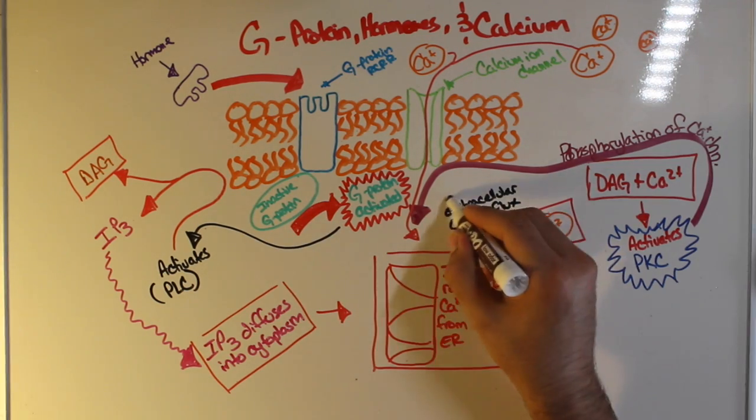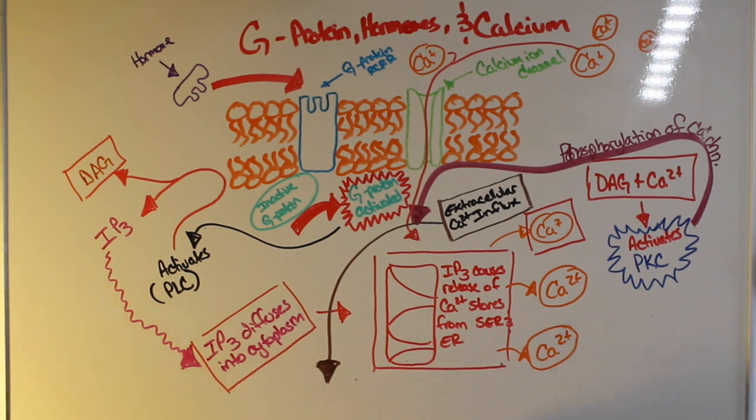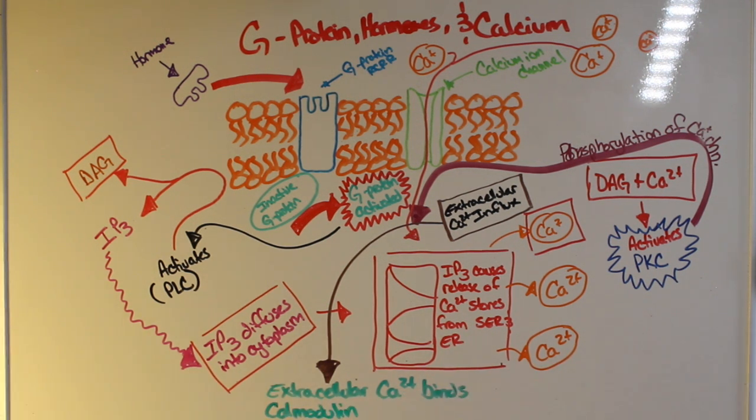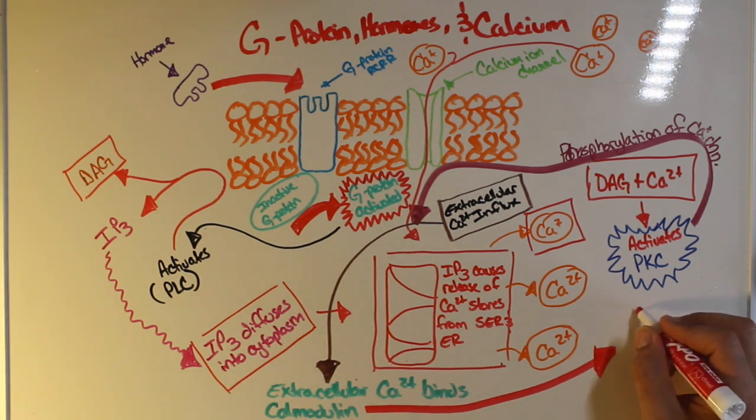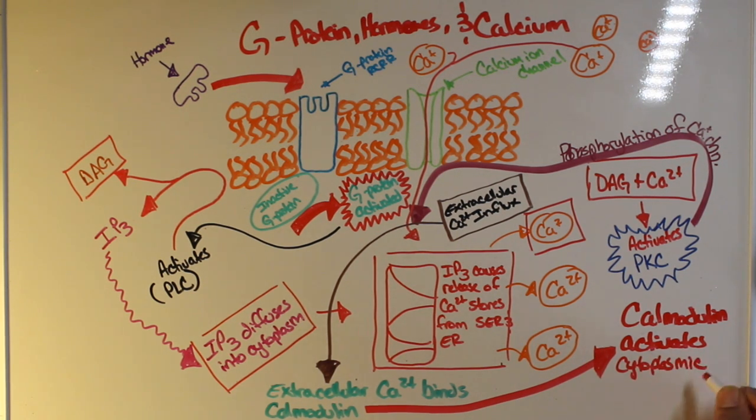Now once this occurs, there will be an abundant amount of calcium within the cell, and Calmodulin will be able to bind to one of these calcium ions. Once this occurs, Calmodulin being bound to a calcium ion is what's actually going to activate other cytoplasmic enzymes that are able to trigger the effects within the cell.